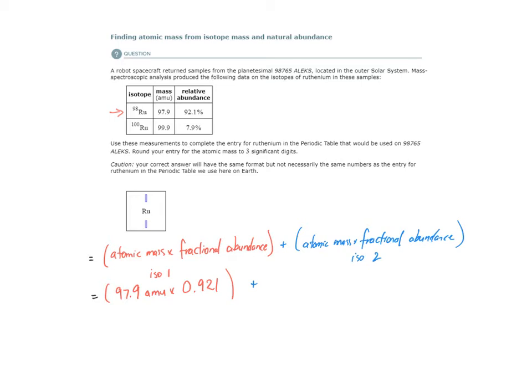We add that to what we get here. The atomic mass of isotope 2, ruthenium-100, is 99.9 amu times the fractional abundance. Now notice here the relative abundance is in the single digits: 7.9% to be exact. So if I move the decimal place to the left twice, I don't end up with 0.79, but 0.079.